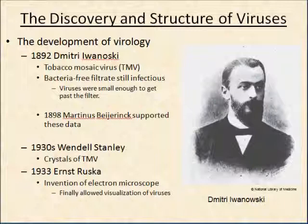Later on, in 1898, Martinus Beijerinck supported these data with his own experiments using the tobacco mosaic virus. By the 1930s, they were beginning to be able to visualize this virus — they were able to use crystals of this virus, which suggested that it was actually a chemical compound. It wasn't until the 1930s, with the invention of the electron microscope, that we were actually able to visualize viral structures.